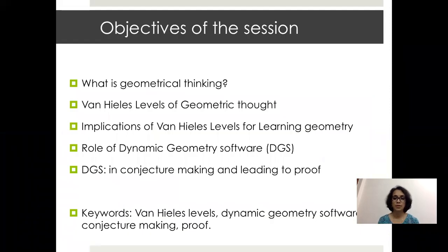The objectives of the session are as follows. First, we will begin with a discussion about what geometrical thinking entails. We'll then move on to the Van Hiele levels of geometric thought and discuss its implications for learning geometry. Further, we will discuss the role of dynamic geometry software — a special kind of software tool for exploring geometrical concepts — and how these can help in conjecture making and also in leading to proof. The keywords are Van Hiele levels, dynamic geometry software, conjecture making, and proof.